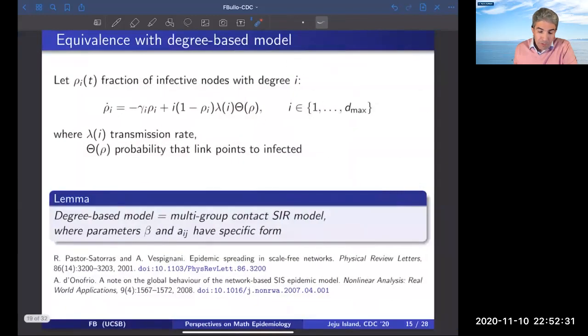There is a number of interesting connections. For example, in physics, much attention has been dedicated to models where the groups in our multi-group model are defined by individuals with the same degree, with the same social degree. This is an equation that you may find in that literature where the time derivative of the fraction rho_i depends upon the transmission rate, which is a function of the degree, and by certain probabilities. There is a wonderful reference by D'Onofrio demonstrating how these degree-based models are closely related to the multi-group model that I am talking about.